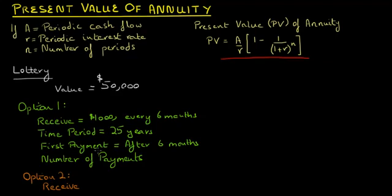With the first payment occurring at the end of the first six-month period, the total number of payments equals the number of payments per year times the number of years over which the payments are made, which equals 50.